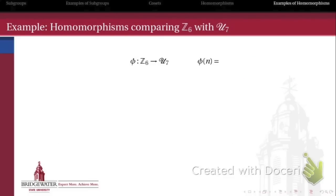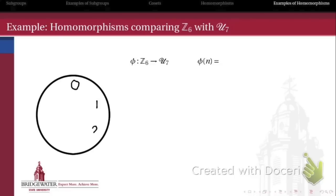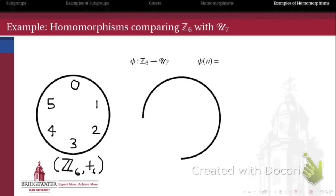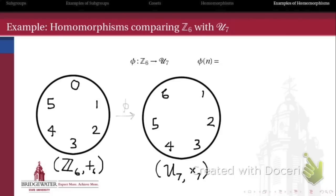Let's look at some examples. Here's a homomorphism that connects the group Z6 — the additive group of integers modulo 6 — with U7, the multiplicative group of units modulo 7. Z6 consists of the residues 0 through 5, and the group of units modulo 7 consists of the residues 1, 2, 3, 4, 5, and 6. So what might a homomorphism between these two groups look like?